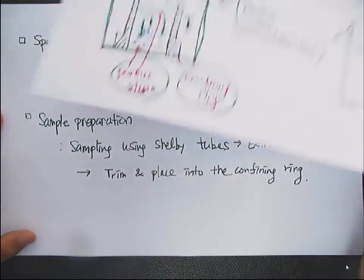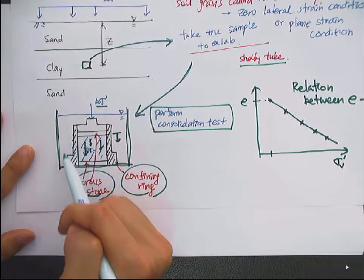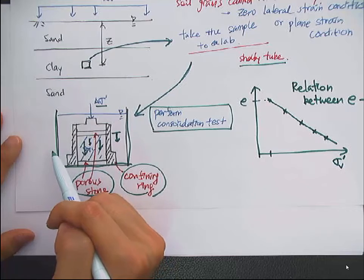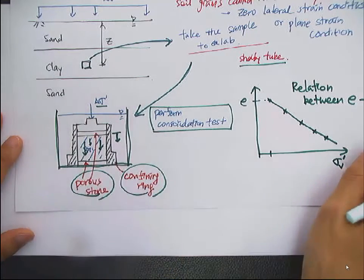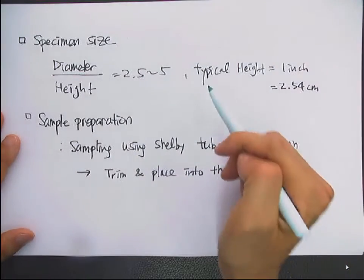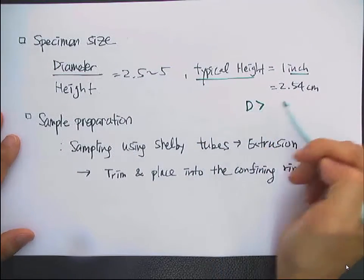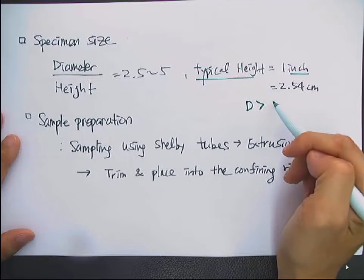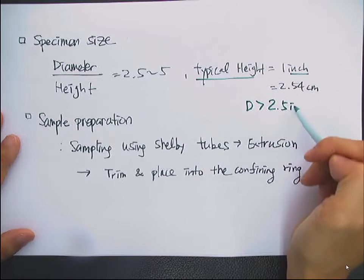So here, if the height is about 1 inch — 2.5 cm — the diameter is about more than 5 cm. Typically, the height is 1 inch and the diameter is larger than 2.5 inches.